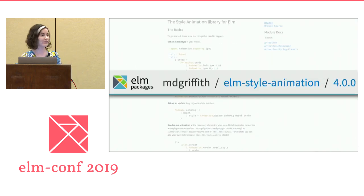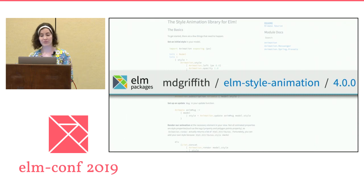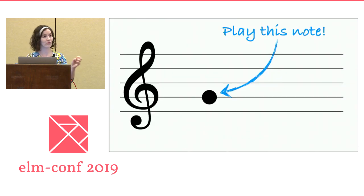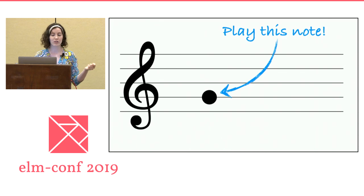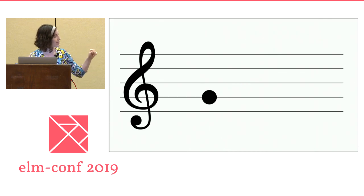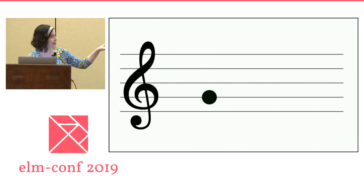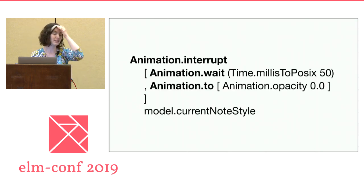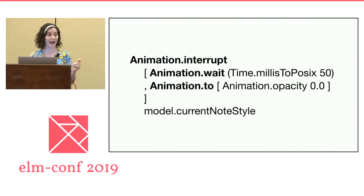The next step was to try out some animation, because the prototype I had so far was just a note appearing and teleporting from one place to another — it felt very mechanical. I tried out Matthew Griffith's Elm animation library. We have this nice way of transitioning things in and out of the page. The goal for my application is it will randomly generate a note, and if I play the incorrect note it will animate and fade out; if I get the note correct it turns green and we get another one. It's a great library — I highly recommend it for UI animations.